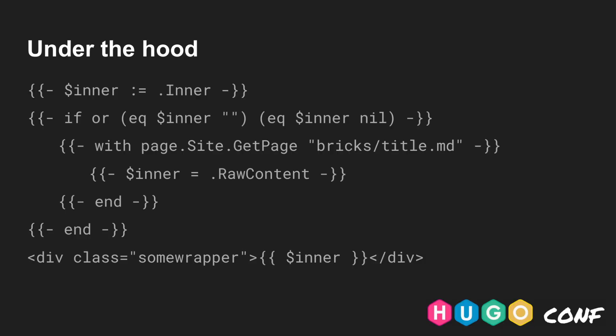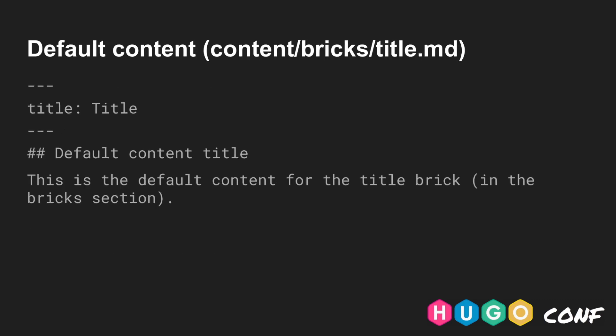Some Hugo fanatics might wonder what code makes this all happen, so let's take a quick look under the hood. The inner content of the shortcode gets stored in a variable called inner. If this variable is empty or nil, the code will try to find the corresponding default content and put it in the inner variable. Finally, the variable is outputted on the screen and may be wrapped in some fancy HTML wrapper. That's all — not too bad. This is what such a default content file looks like; you store it in a bricks folder. Pretty straightforward.